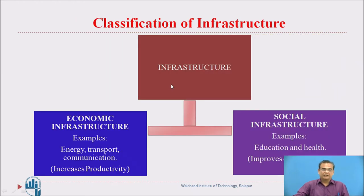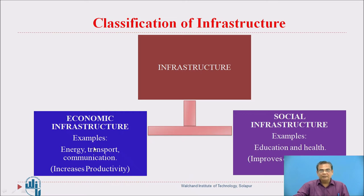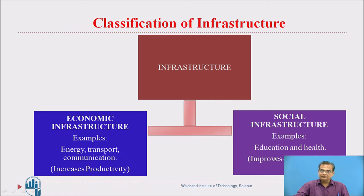Classification of infrastructure can be divided into two parts: economic infrastructure and social infrastructure. Under economic infrastructure, elements such as energy, transportation, and communication — all those which increase the productivity of a country — are included. Under social infrastructure, education, health, and all sectors which improve the social standards of citizens are included.